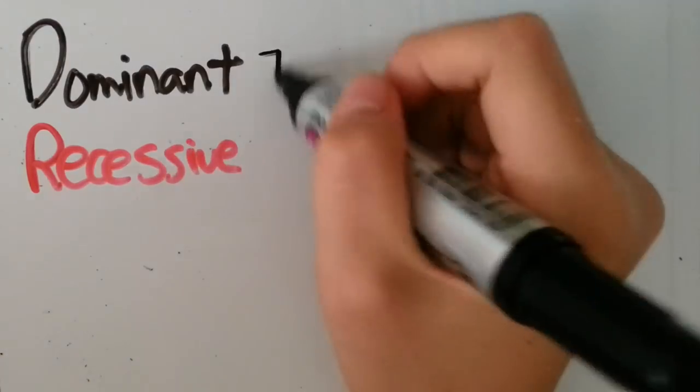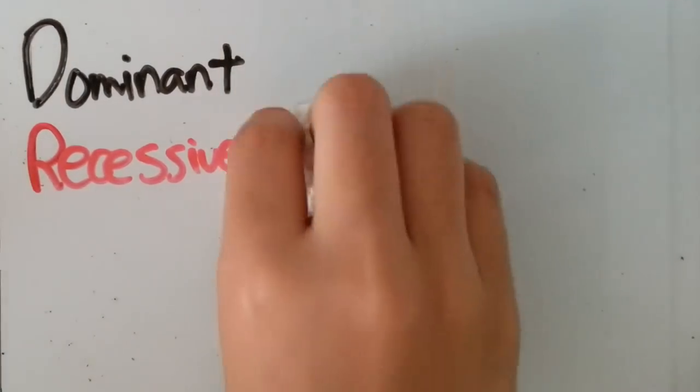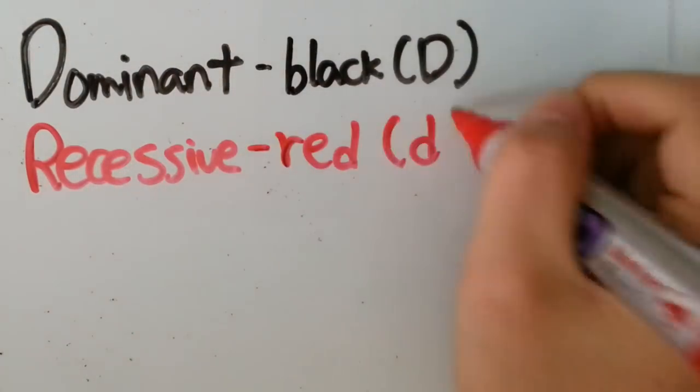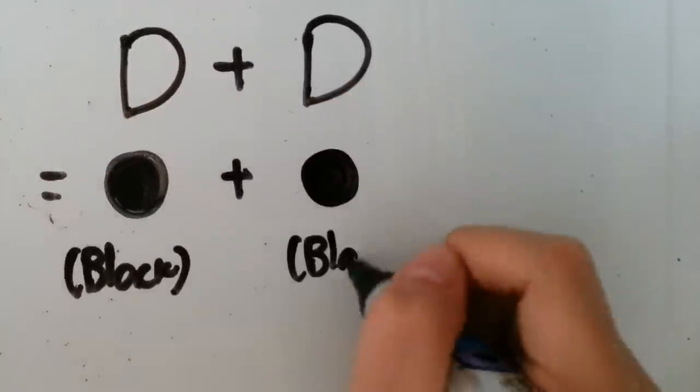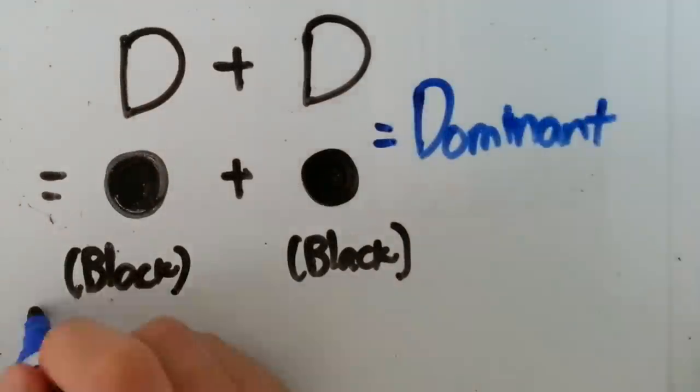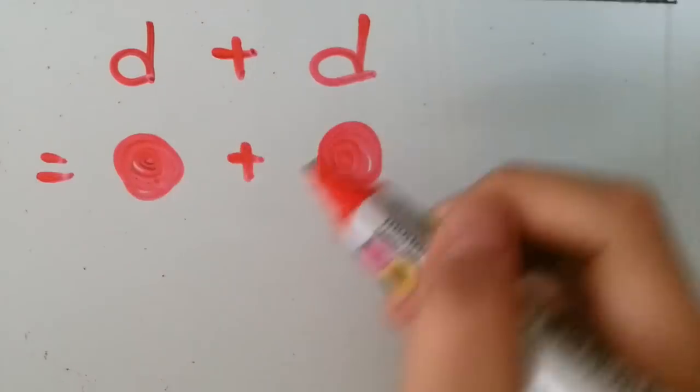Dominant and recessive traits are like a color palette, dominant being black and recessive being red. When there are two dominant alleles, the person will carry a dominant trait, just like black being black when mixed together. This is the same for recessive traits.